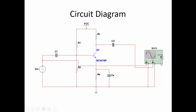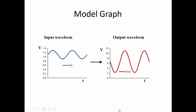The oscilloscope is connected to measure the input and output waveforms. Channel A is connected to the input signal and Channel B is connected to the output signal.